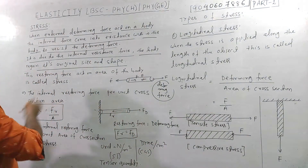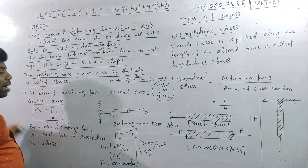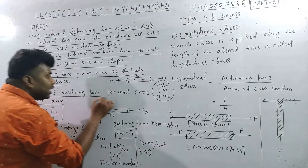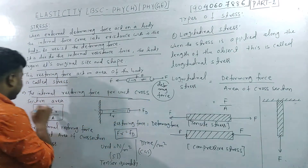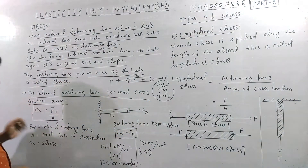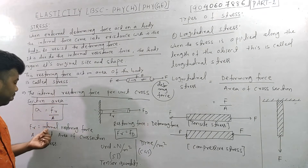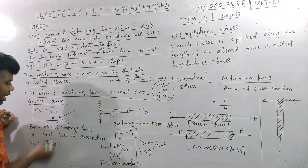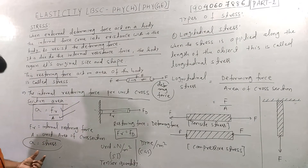This restoring force acting on the area of the body is called stress. The internal resistance force per unit area of cross-section. The formula: sigma is equal to Fr by A, where Fr is the internal restoring force and A is the area.